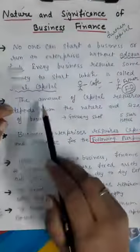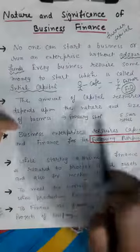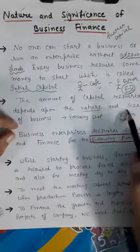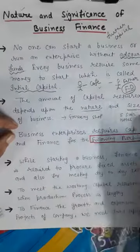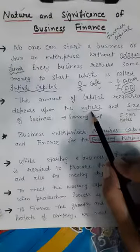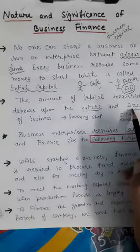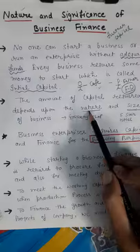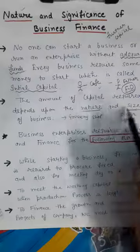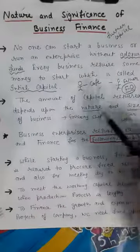The next point says that the amount of capital required depends upon the nature and size of the business. The money you need depends on the nature — whether it is a manufacturing, trading, or service business — and on the size, whether it is large scale or small scale. If the nature is manufacturing, the requirement of money will be more; if it's trading, the requirement will be less. If the size is large, the money requirement will be more; if it's small, it will be less.